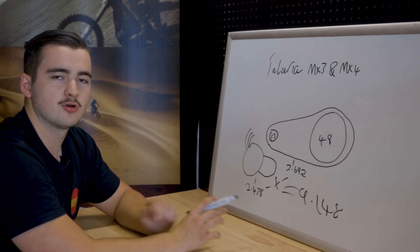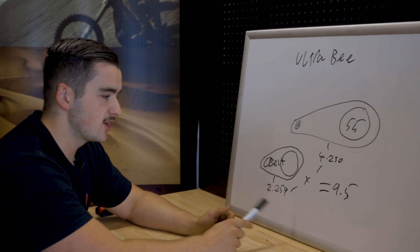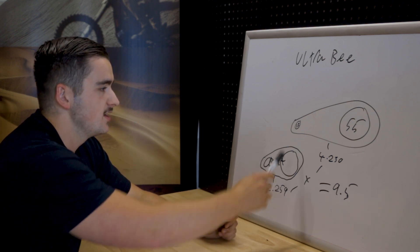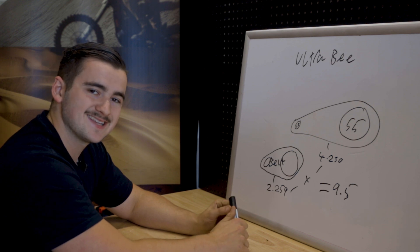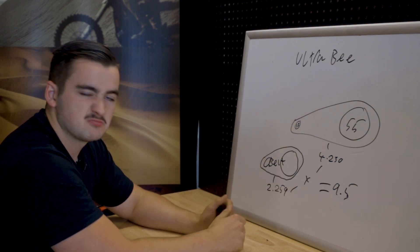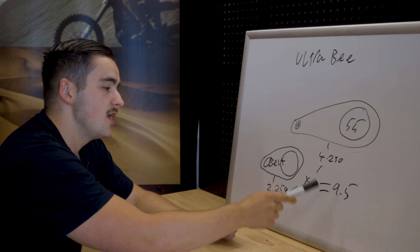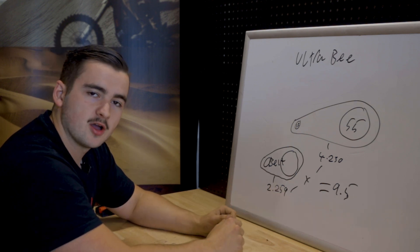Look at that. Horrible writing but there you go. Ultra B running the stock belt drive is 2.259. Then for argument's sake front sprocket is 13 teeth. Rear sprocket let's just say 55 gives us 4.230. That gives us a final drive of 9.5.